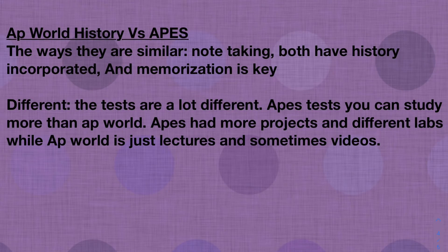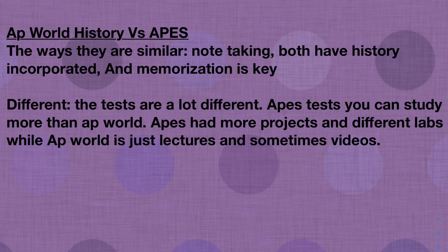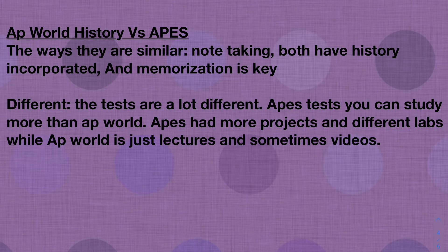The class I compared with AP Environmental Science was AP World History. The ways they are similar: both have a lot of notes to take in class and at home, both have history incorporated into them, and for both classes memorization is key. They're different in many ways too — AP Environmental Science tests you can study more for, in the sense of memorizing certain things, while AP World is more random with a lot of stimulus-style questions. APES also had a lot more projects and different labs, while AP World History has mostly lectures and occasional videos.